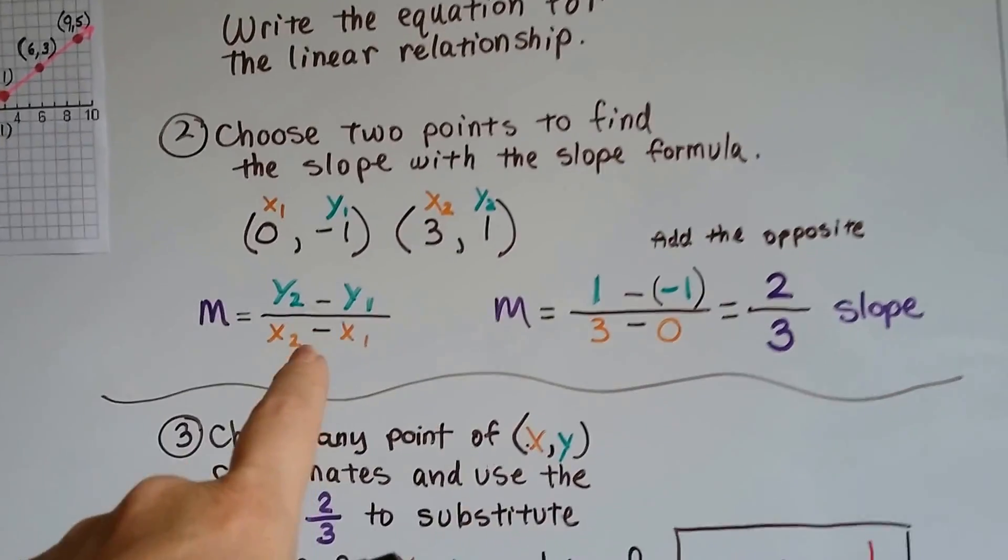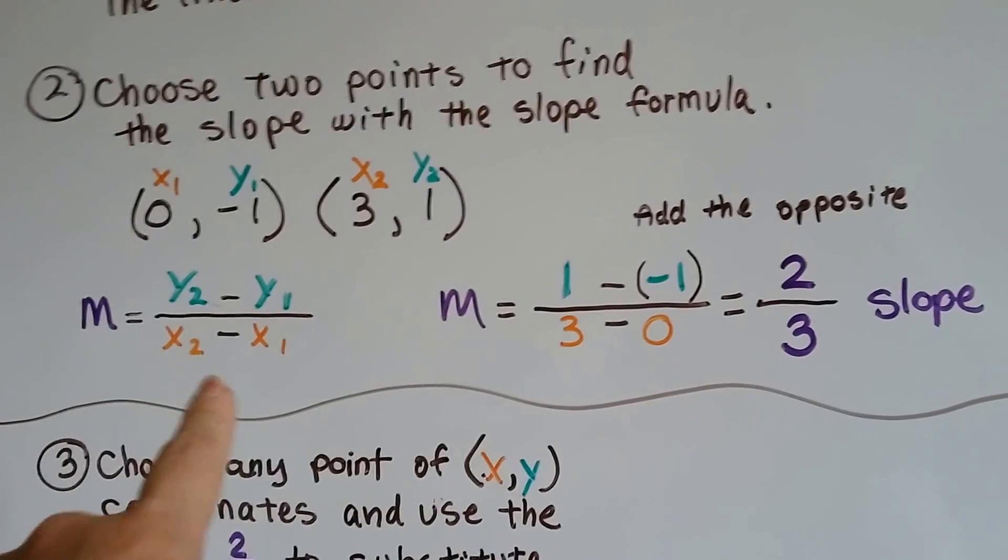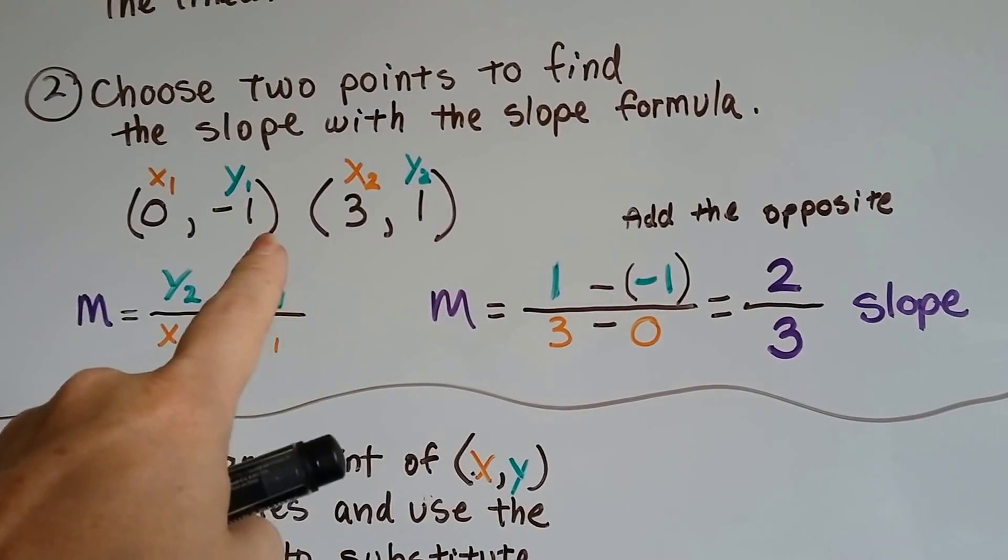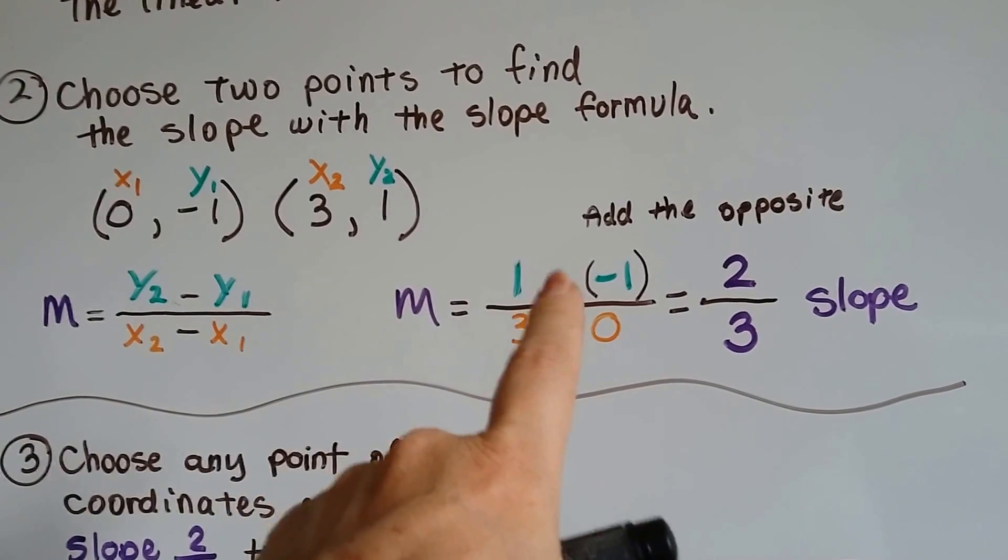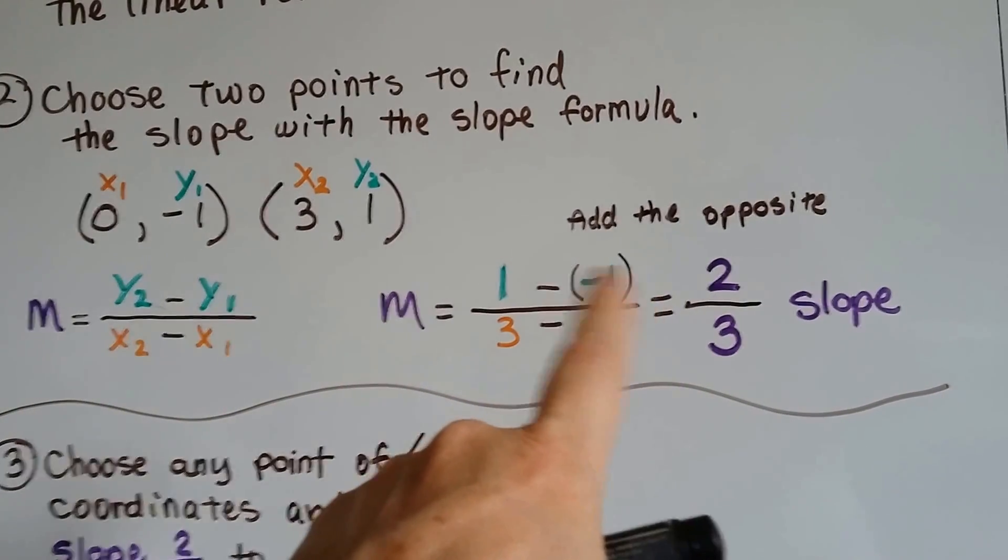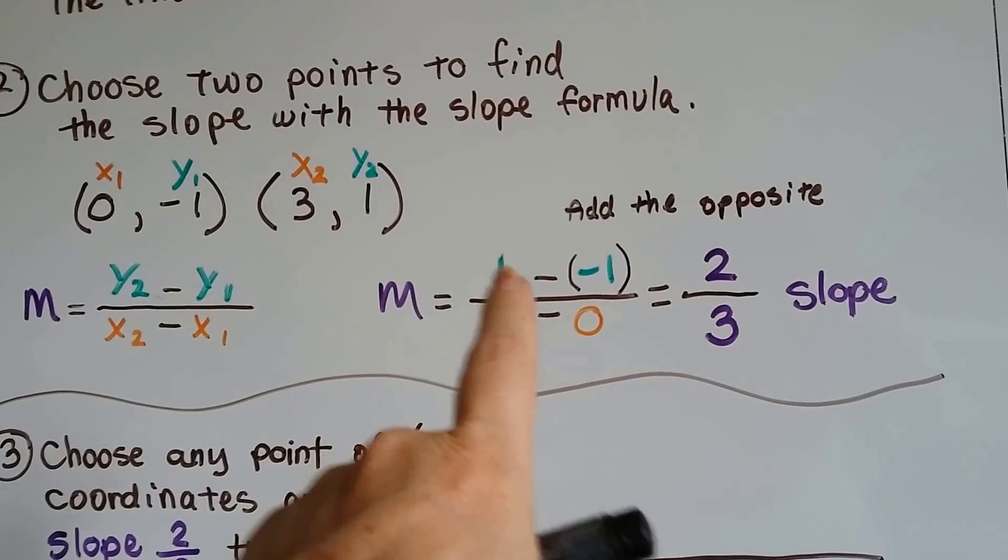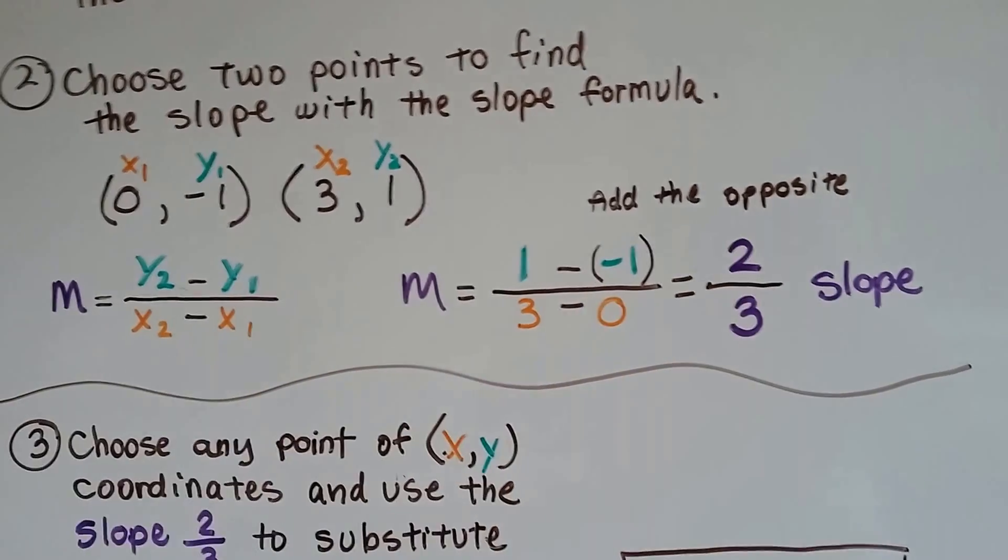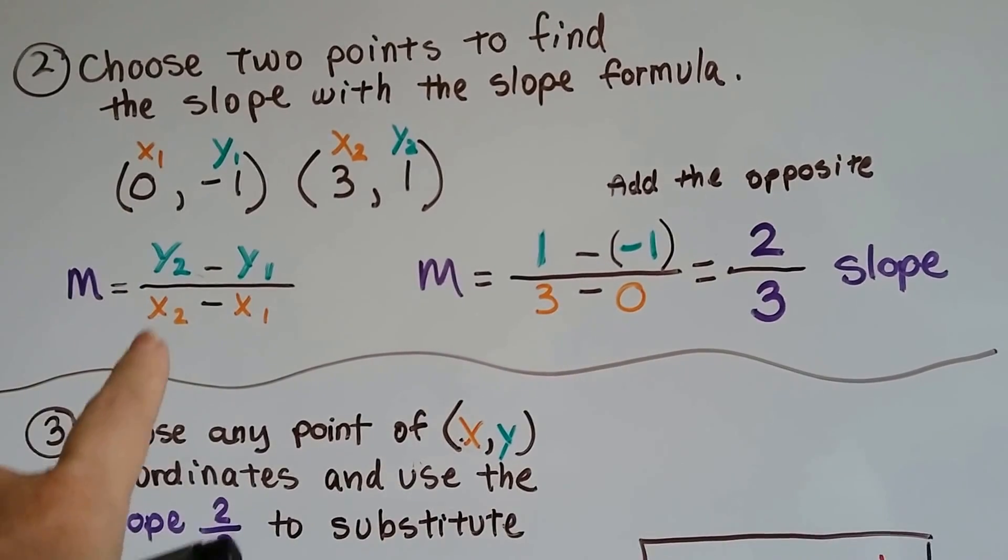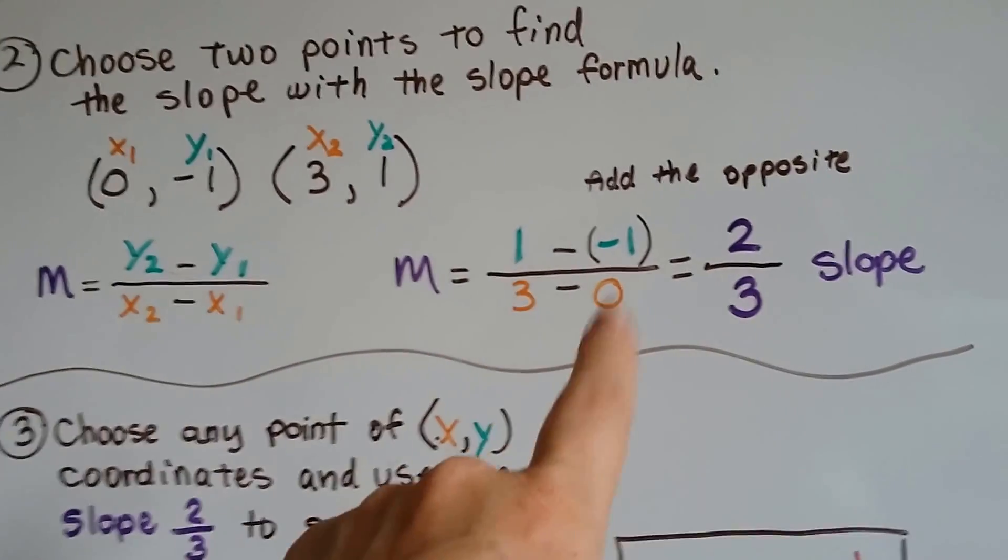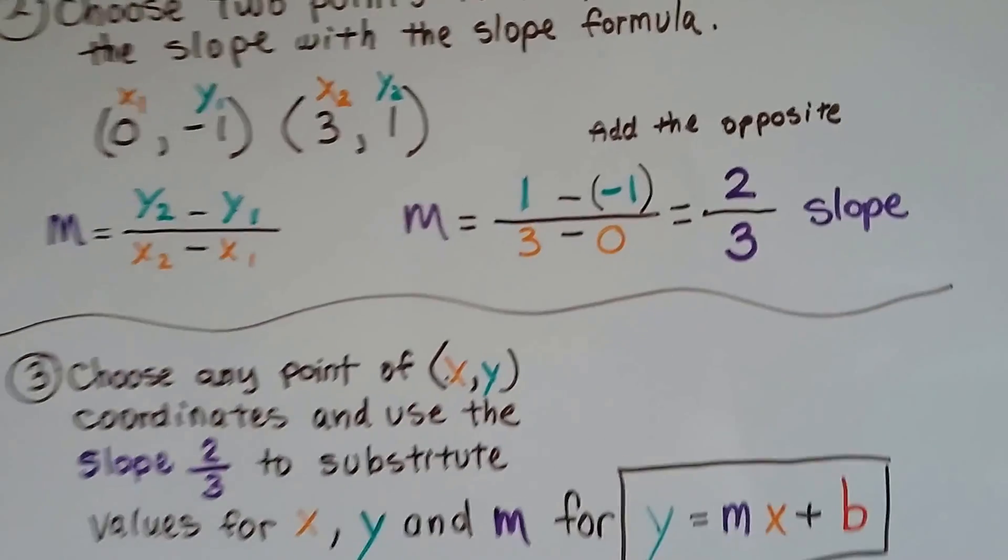So here's our slope formula, and we're going to plug these values in. So y2 is 1, and y1 is -1. That gives us 1 minus (-1). Remember, when we subtract negative integers, we add the opposite. So 1 plus 1 is 2. Now we've got 3 take away 0. That's x2 minus x1. 3 take away 0 is 3. Our slope is 2 thirds.